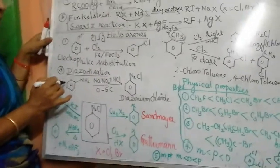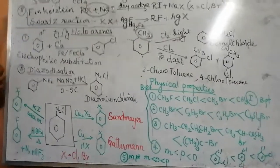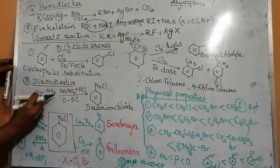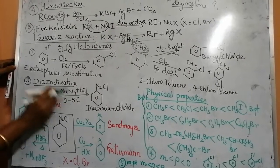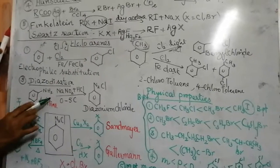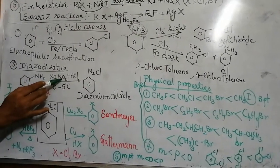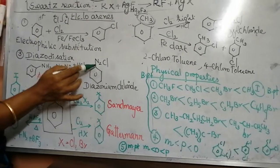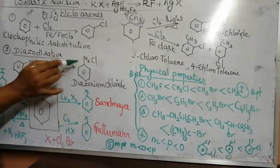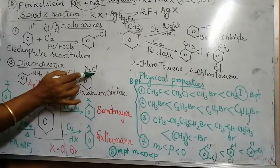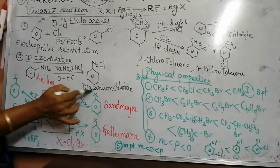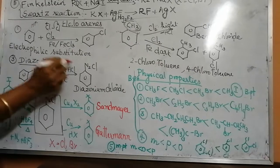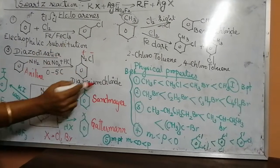Now, very very important method, diazotization. The name of this compound is aniline. Amino benzene is called aniline. This aniline will be treated with NaNO2, sodium nitrite, HCl, at 0 to 5 degrees C. Diazotization will take place. Diazo means nitrogen. Azote means nitrogen. Diazonium chloride, benzene diazonium chloride. It looks like a salt. It behaves like a salt. We will see the amines chapter in detail about this diazonium chloride.